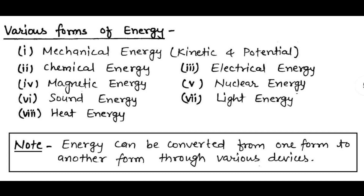There are various forms of energy. Mechanical energy — when work is being done or stored — is the sum of kinetic energy and potential energy. Other forms include chemical energy, magnetic energy, electrical energy, nuclear energy, sound energy, light energy, and heat energy. Most importantly, energy can be converted from one form to another through various devices. There is never any creation or destruction of energy — energy simply converts from one form to another.